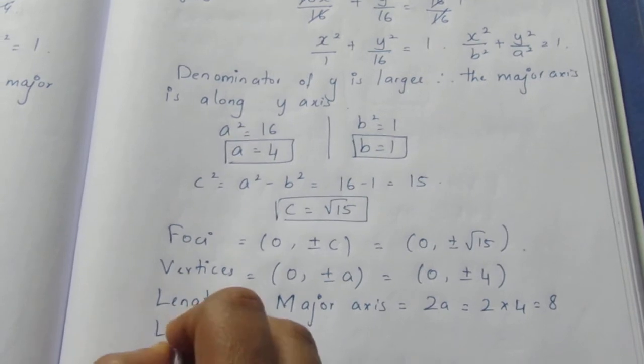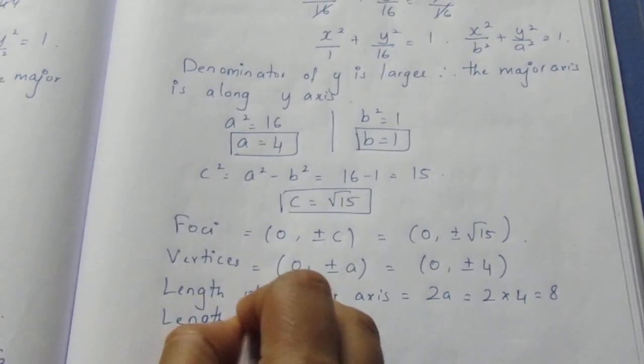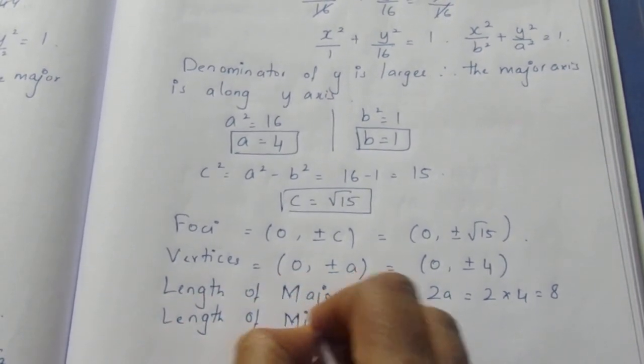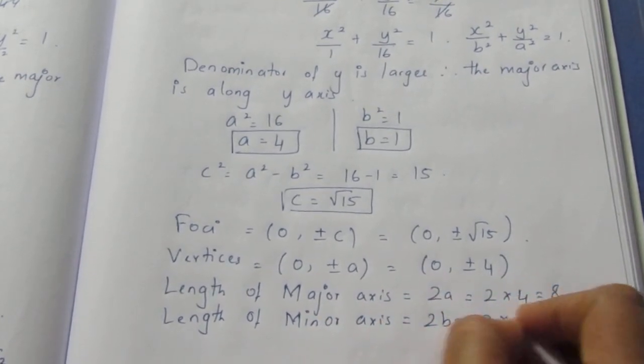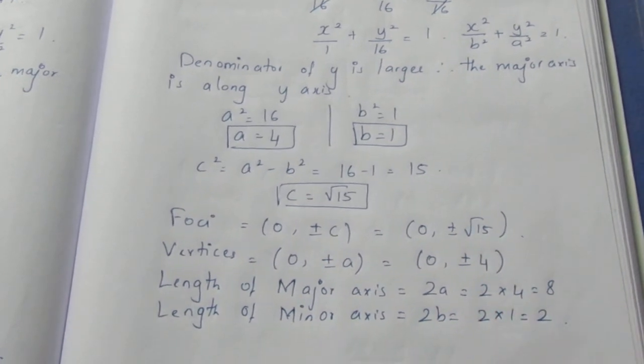Next length of the minor axis. Minor axis is 2b. So 2 × 1 = 2.